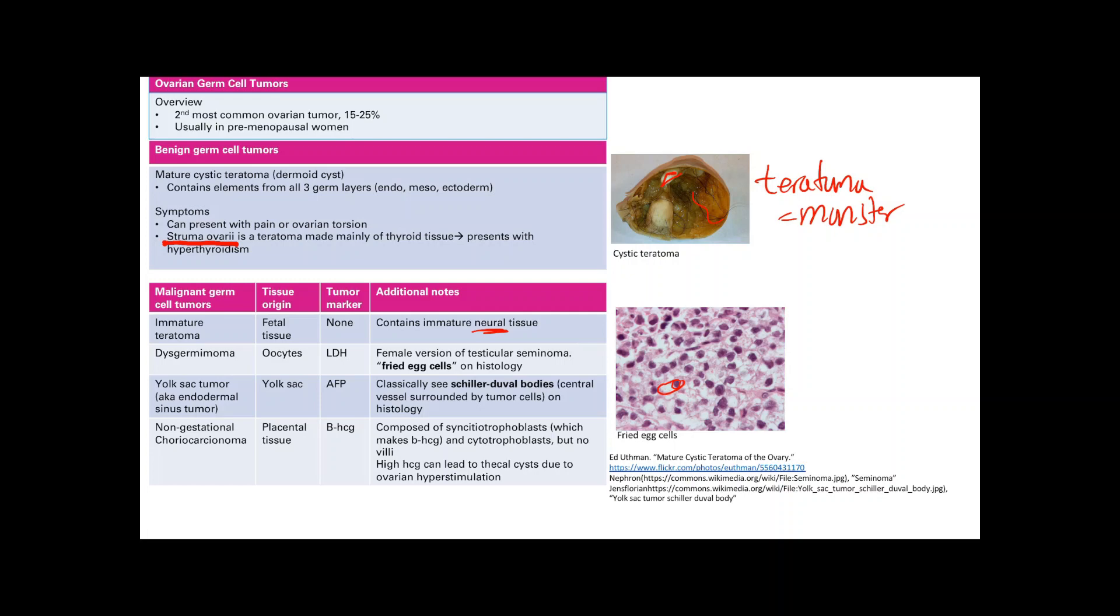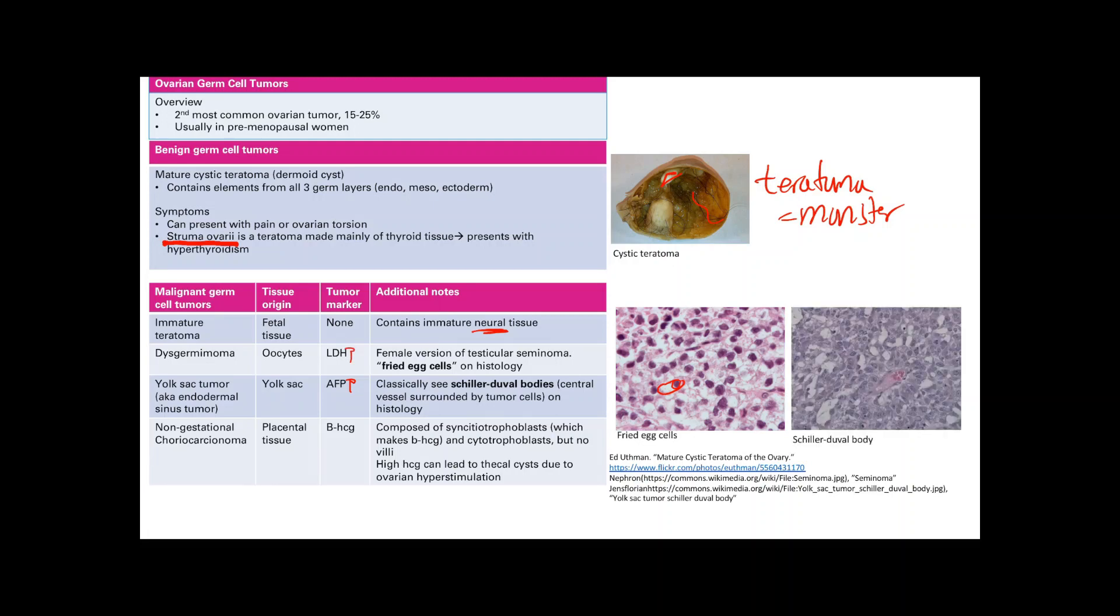A yolk sac tumor, also called an endodermal sinus tumor, is from the yolk sac obviously. There's two things that make AFP: the yolk sac and the liver. So AFP will be elevated here in the yolk sac tumor. You classically see Schiller-Duval bodies. You've got to memorize this. You're going to see this a lot. It's a central vessel surrounded by tumor cells.